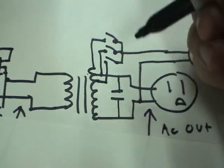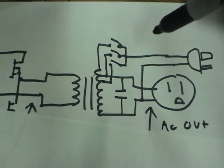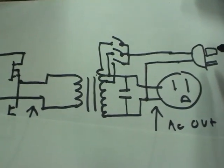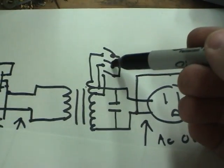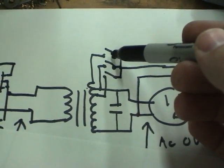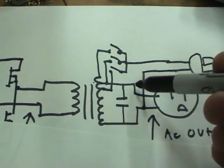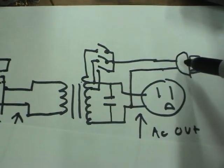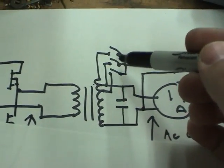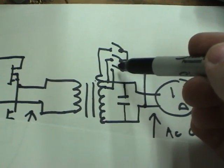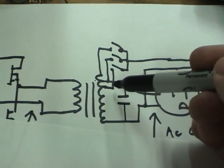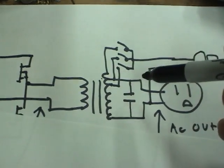And the reason they do that, is so that they can compensate for line voltage variations. So if the line voltage is too high, they'll switch off this relay, switch on this one, which will form an auto transformer, slightly dropping the voltage. And likewise, if the voltage is too low, they'll switch off that one, switch on this one, which will create an auto transformer that slightly raises the voltage.